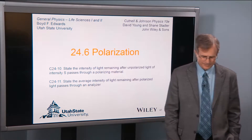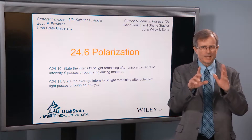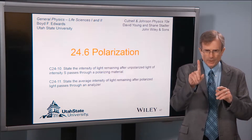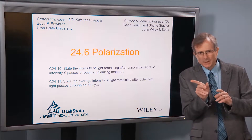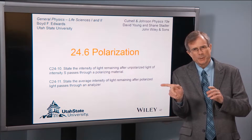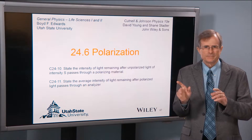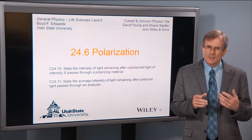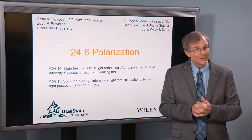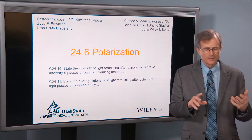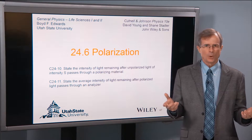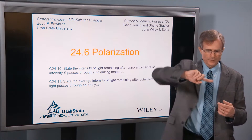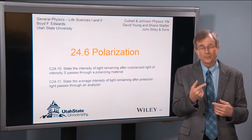Polarization. We've talked about the fact that electromagnetic waves have a direction of the electric field, a direction of the magnetic field that's perpendicular, and then E cross B gives the direction of propagation. But what I've kind of suppressed until now is the fact that a lot of sources, like an incandescent bulb, or the sun, or other sources, actually produce electromagnetic radiation with electric fields directed in a variety of directions.